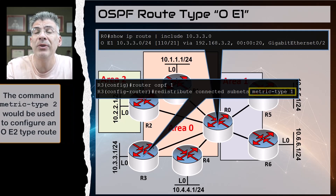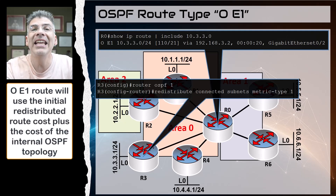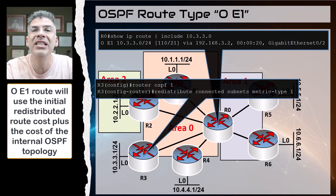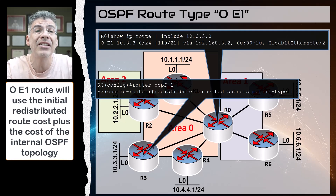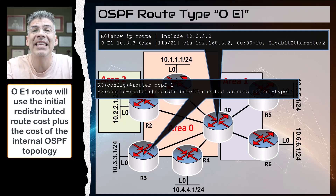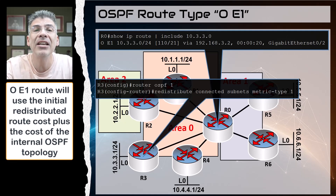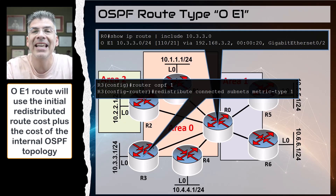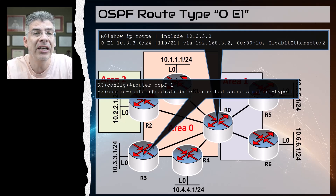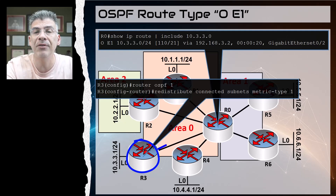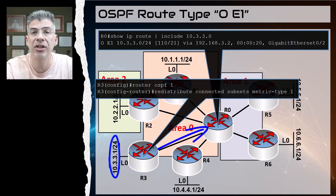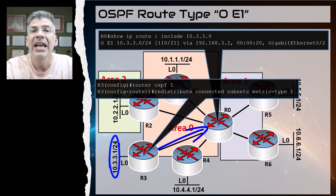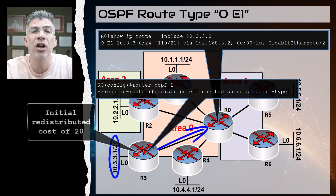So what's the difference between E1 and E2? An E1 external route will use the initial cost of the redistributed route given by the ASBR, plus the internal cost of the OSPF topology to get to the ASBR. When R3 advertises the 10.3.3.0/24 route to R0 as an E1 route, it advertises it with an initial cost of 20.